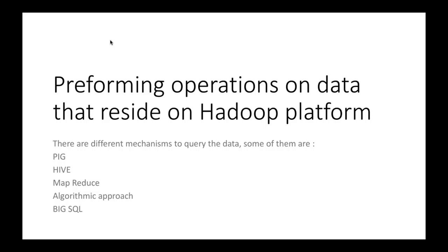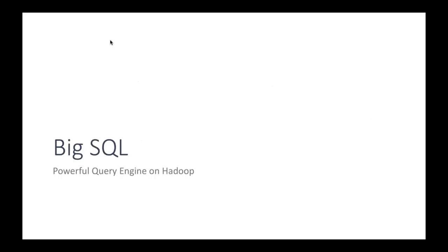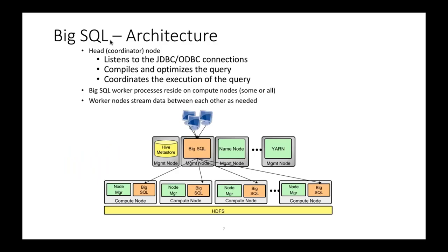Why BigSQL? BigSQL is a very powerful query engine on Hadoop. Its architecture has JDBC and ODBC components, making it very easy to integrate with any database or inside Hadoop. It compiles and optimizes a query — it's a query optimizer and compiler too. Whenever you trigger a query, it will compile it and bring you the result, coordinating the execution of the query, making it very easy to just write a simple query and get the results.